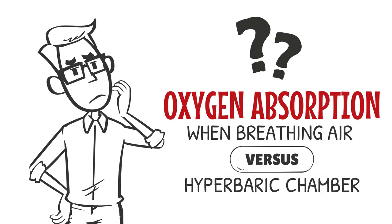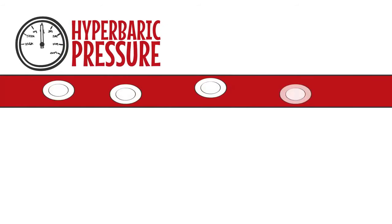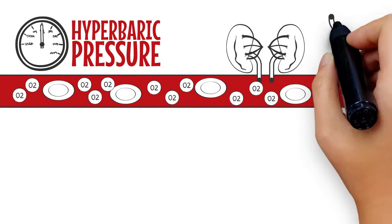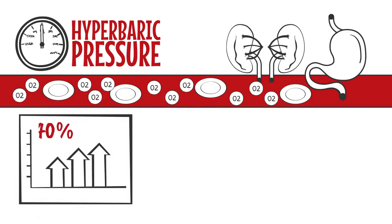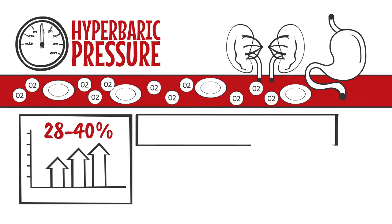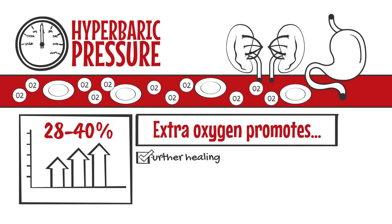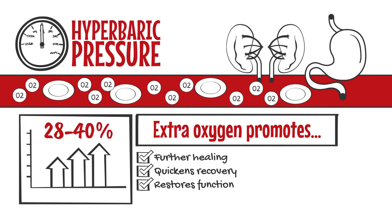In addition to the normal absorption, oxygen will also dissolve directly into tissue and blood plasma, increasing our absorption by 28 to 40 percent. This extra oxygen promotes further healing, quickens recovery, restores mitochondrial function, reduces inflammation, kills anaerobic infections, fuels cells, and heals the nervous system.